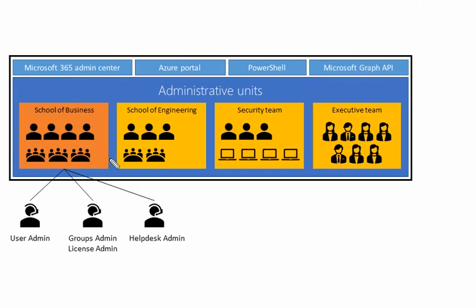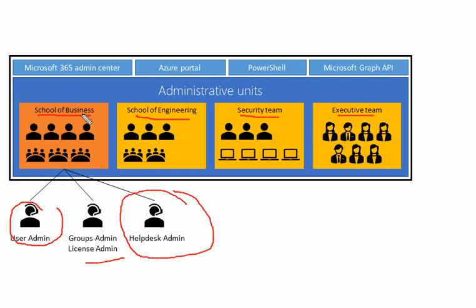We can visualize administrative units for an organization like this: different business units such as school of business, school of engineering, security team, and executive teams are each separate. We can assign someone as user administrator, group admin, license admin, and helpdesk admin for each particular business unit, providing a separation of roles per administrative unit.